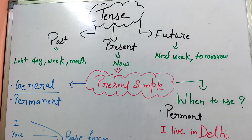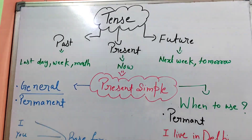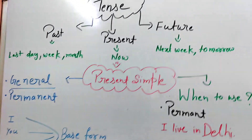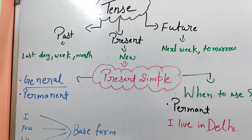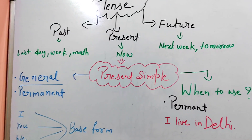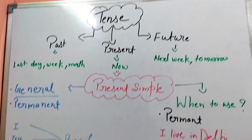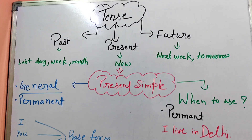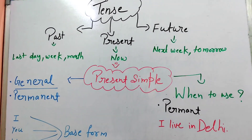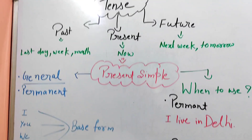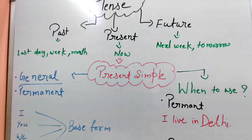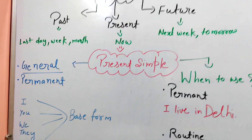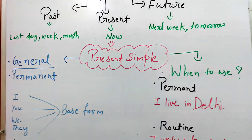Tense tells you about time — when something will happen. When you see 'last day,' 'last week,' 'last month,' or some time before, that is Past. Present is now. Future is coming — next week, tomorrow, next month, next year. But now we will start with Present Tense.